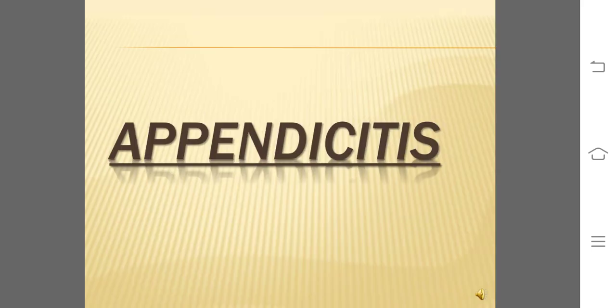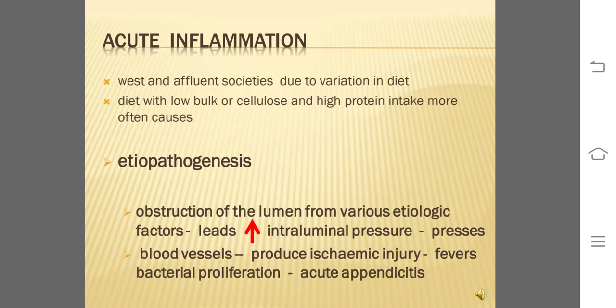Let's see appendicitis. Acute appendicitis is acute inflammation of the appendix and is the most common acute abdominal condition confronting the surgeon. The condition is more commonly seen in older children and young adults and is uncommon at the extremes of age. The disease is seen more frequently in affluent societies, which may be due to variation of diet — a diet with low bulk or cellulose and high protein intake more often causes appendicitis.